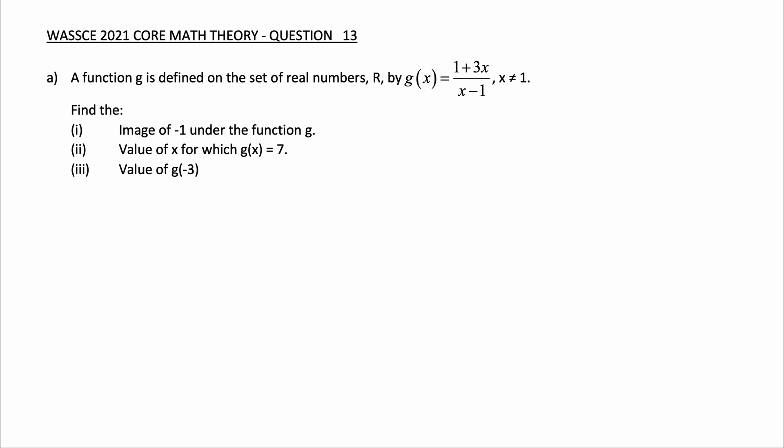The function g is defined on the set of real numbers r by g(x) = (1 + 3x) / (x - 1), where x is not equal to 1.